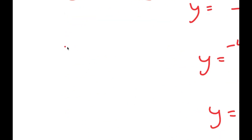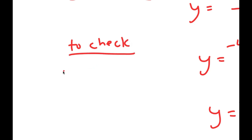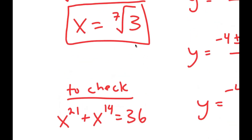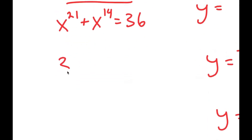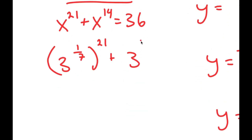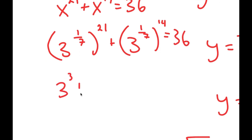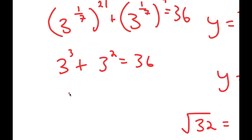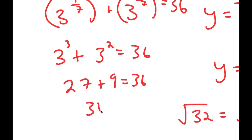Now to check: the original equation was x to the power of 21 plus x to the power of 14 equals 36. The 7th root of 3 is the same as 3 to the power of 1 over 7. So 21 times 1 over 7 is 3, giving 3 to the power of 3, and 14 times 1 over 7 is 2, giving 3 to the power of 2. That gives us 27 plus 9, which equals 36. So 36 equals 36. ✓